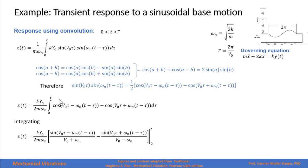The integral is now straightforward because the integral of a cosine is a sine. We must remember to divide by the internal derivative. In one term the denominator is v sub zero plus ωₙ, and in the other it is v sub zero minus ωₙ. We then evaluate the integral from zero to t.